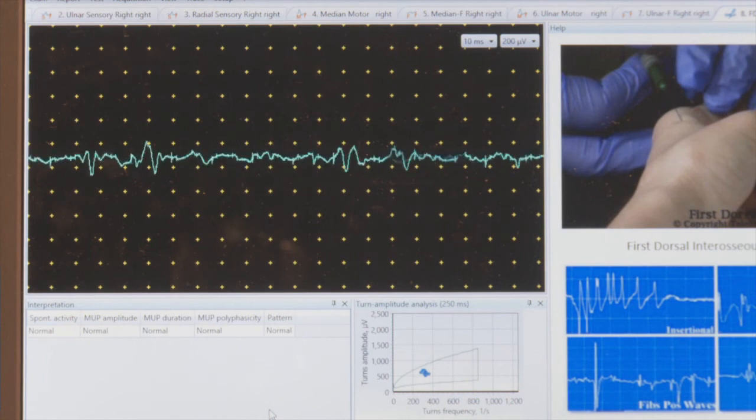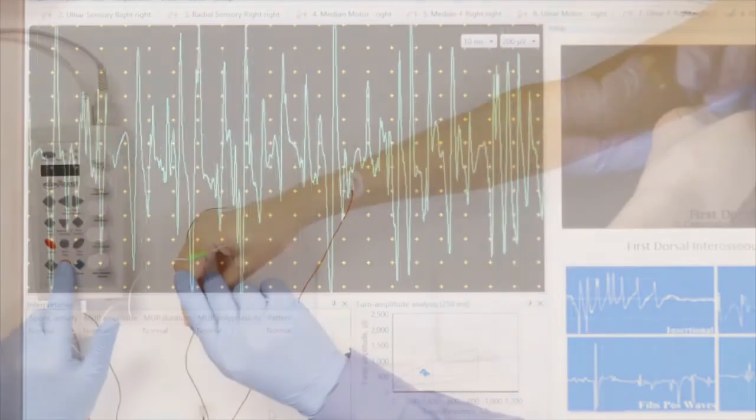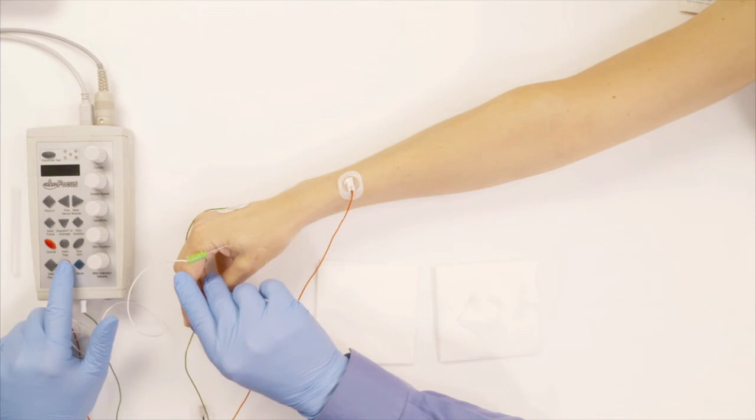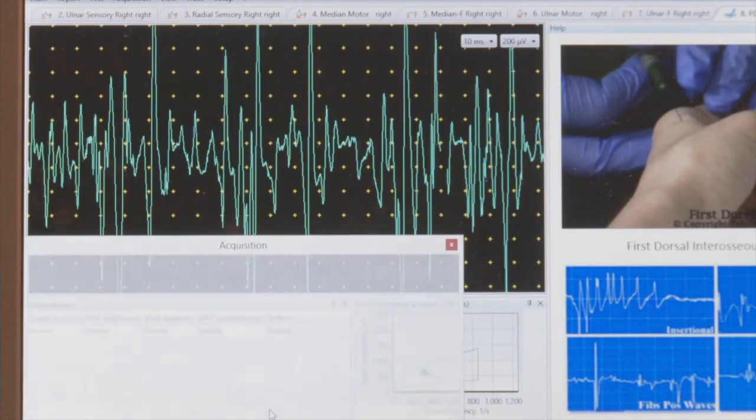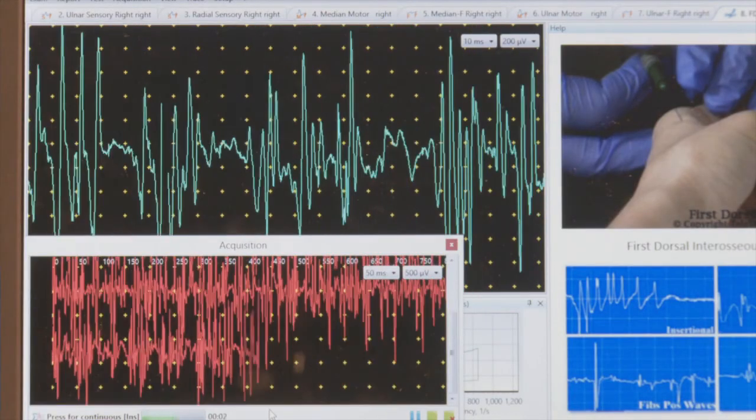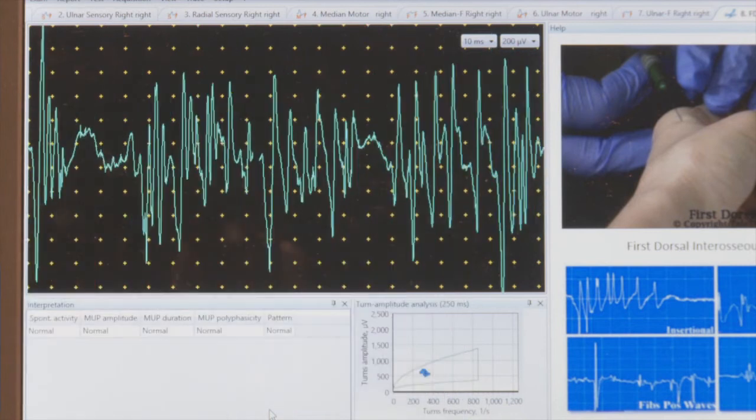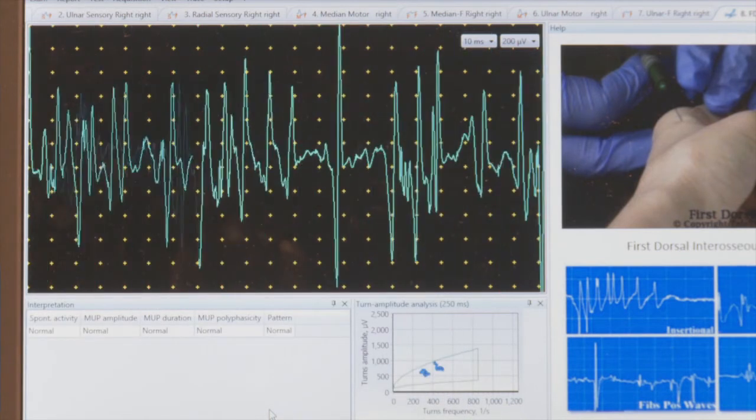The next level is I do moderate contraction. And again, I do exactly the same thing here. I press on the right. And as soon as the screen is filled, I press store. Now relax. And now you can see that there's more activity.